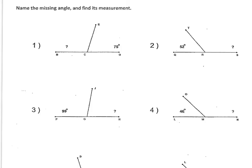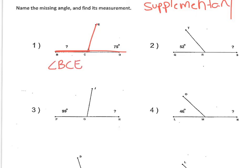Now we're going to look at one more situation — finding missing angles with supplementary angles, where the two angles make a straight line. The missing angle is angle B-C-E. Since together they make 180 degrees, we do 180 minus this angle here, and that tells us this side must be 105 degrees.